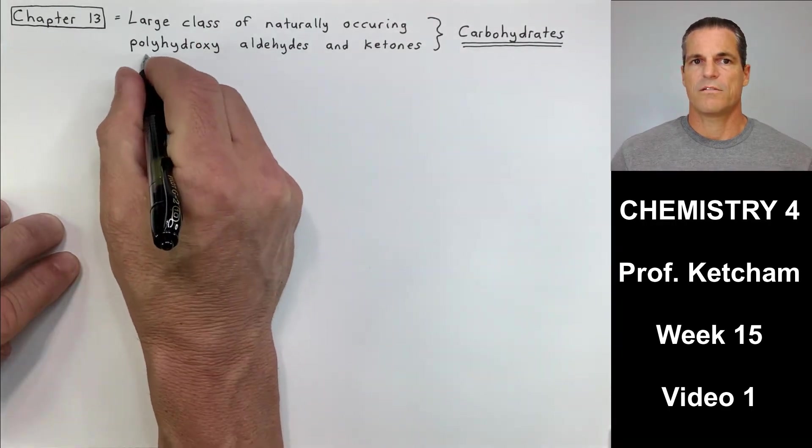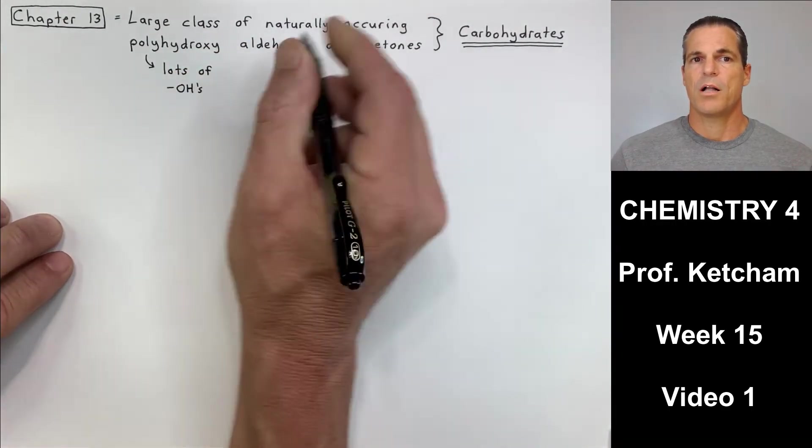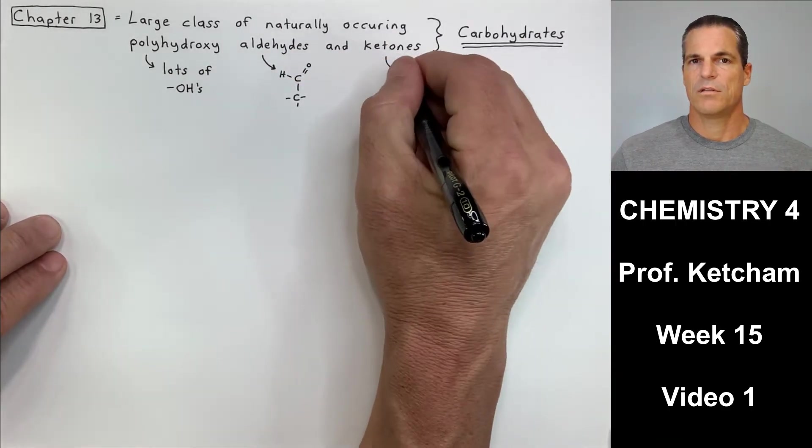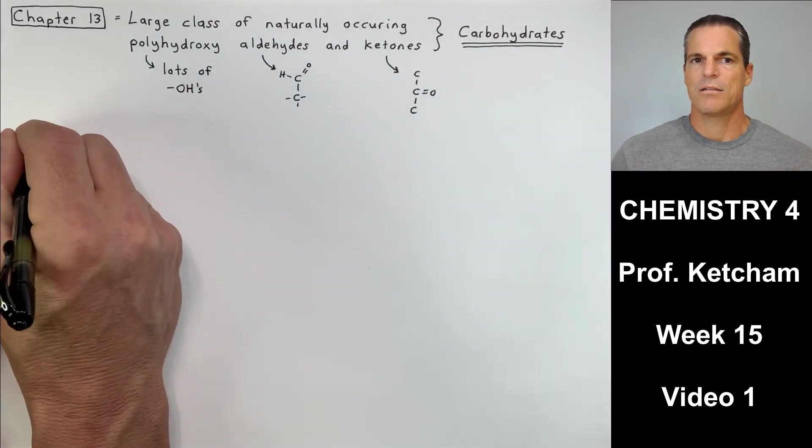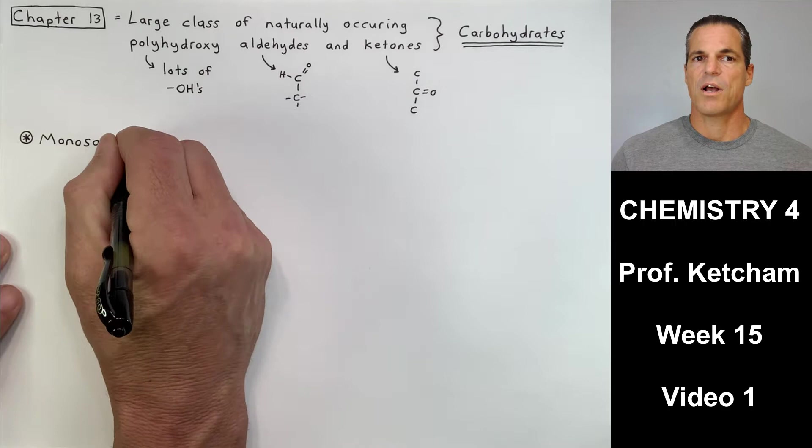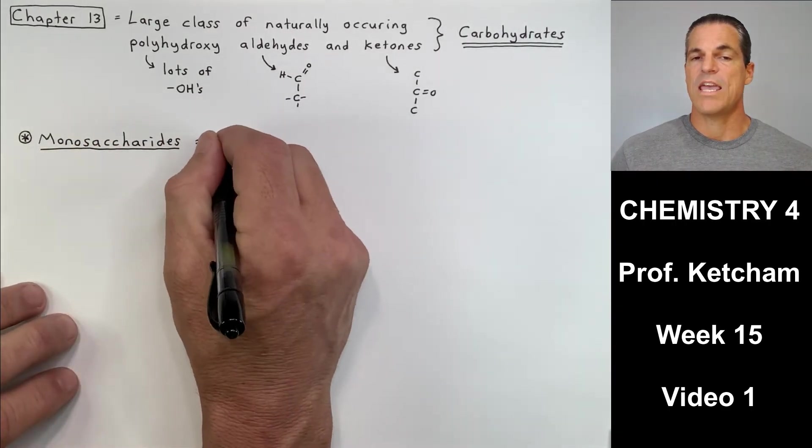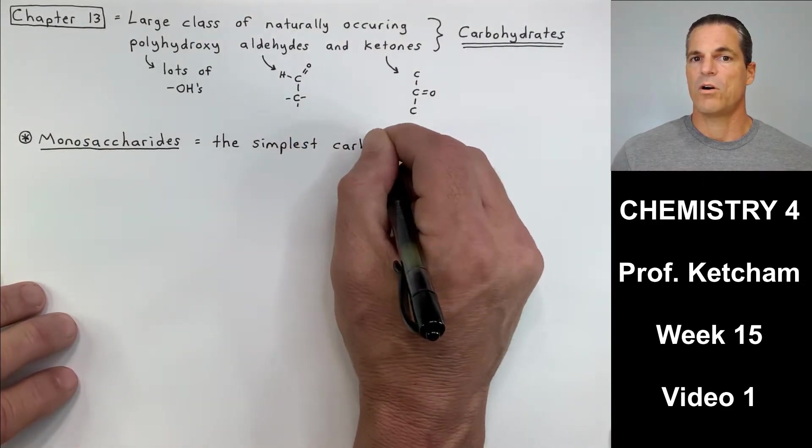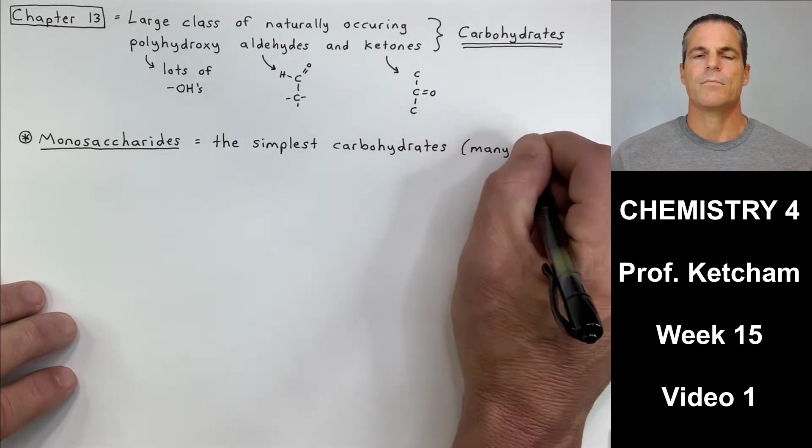Carbohydrates are defined as a large class of naturally occurring polyhydroxy aldehydes and ketones. So those last four words are pretty busy. Polyhydroxy means lots of OHs, right? Lots of hydroxyl groups. Aldehydes are C double bond O, and they're on the end. And ketones are C double bond O, surrounded by two neighboring carbons.